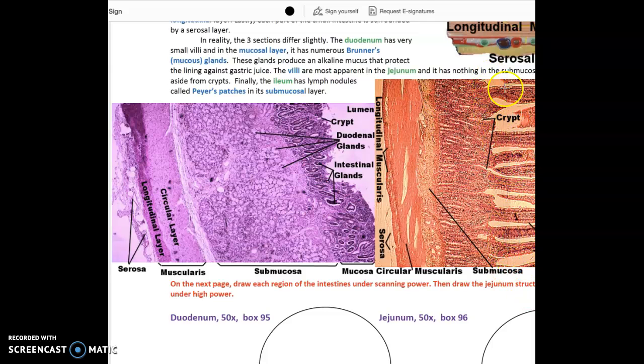This is all the mucosa in here. This is the submucosa. Here's the circular muscularis. Here's the longitudinal. Here's the serosa. This actually is a nice view of the serosa. It's actually distinct.